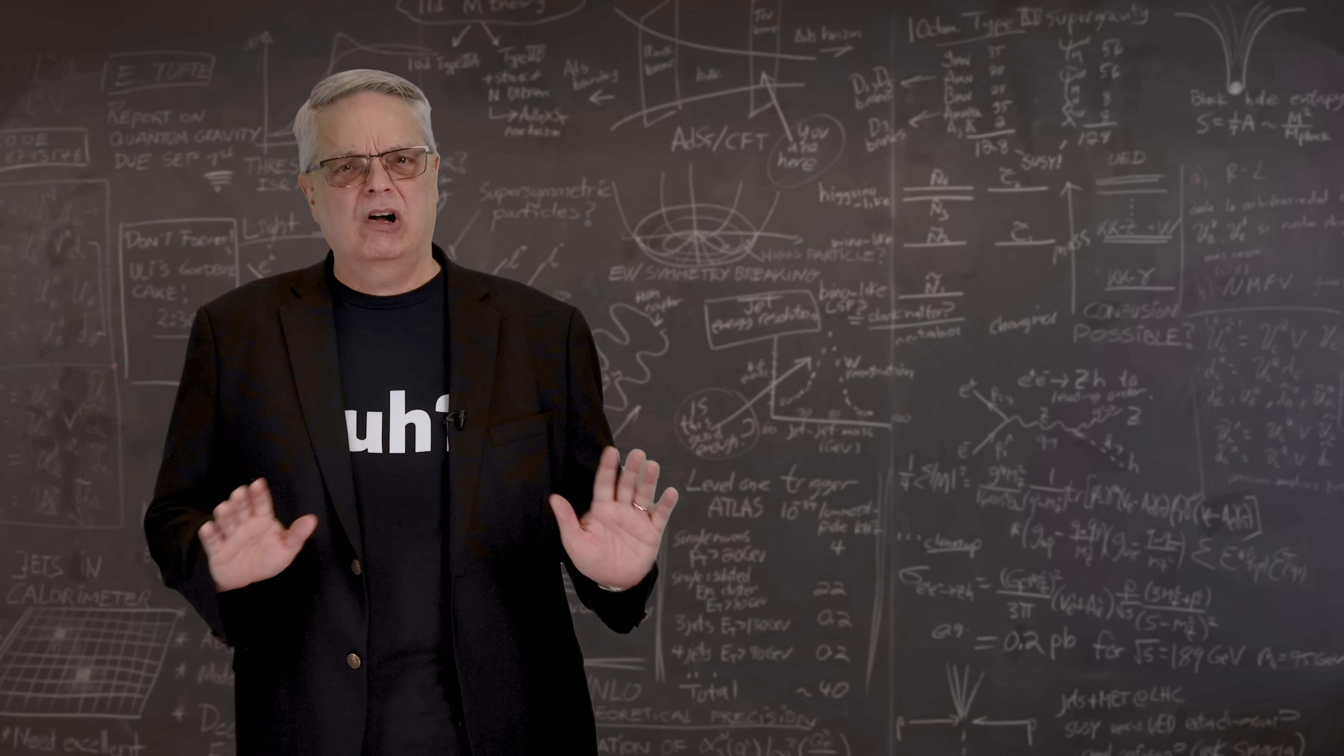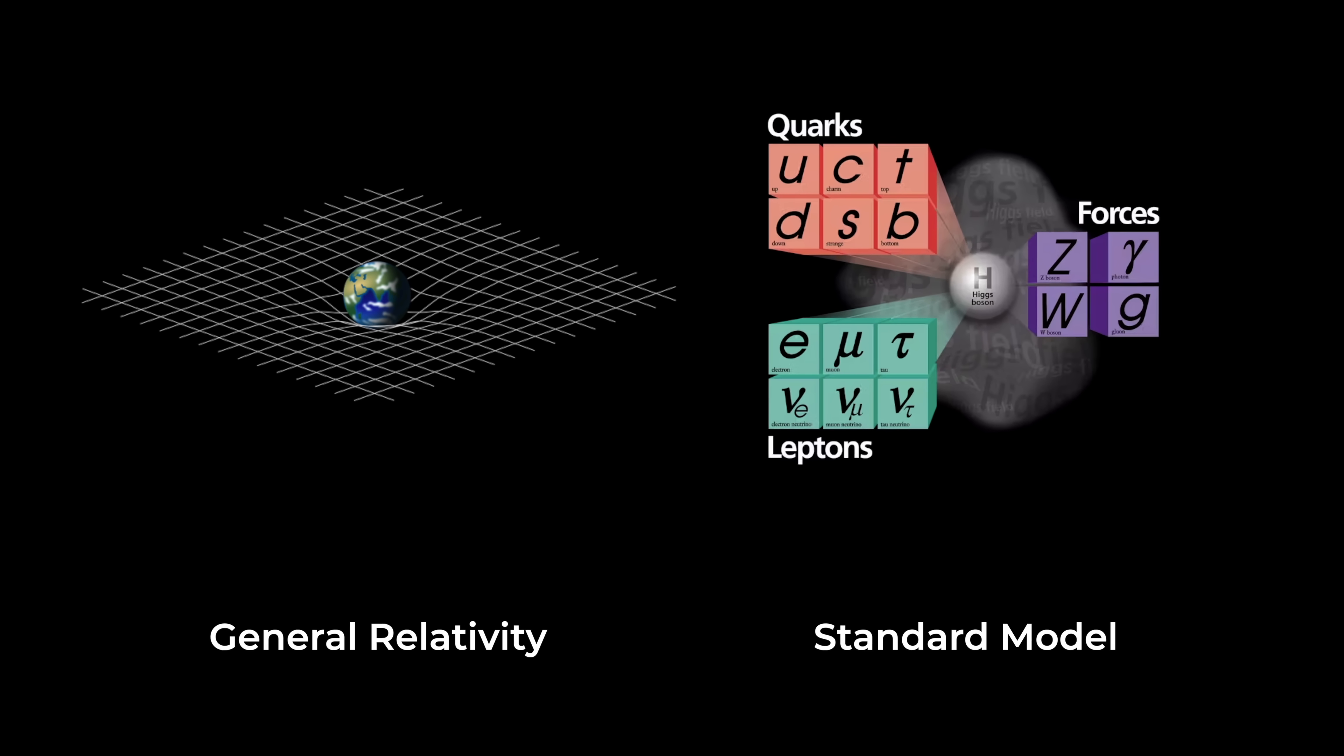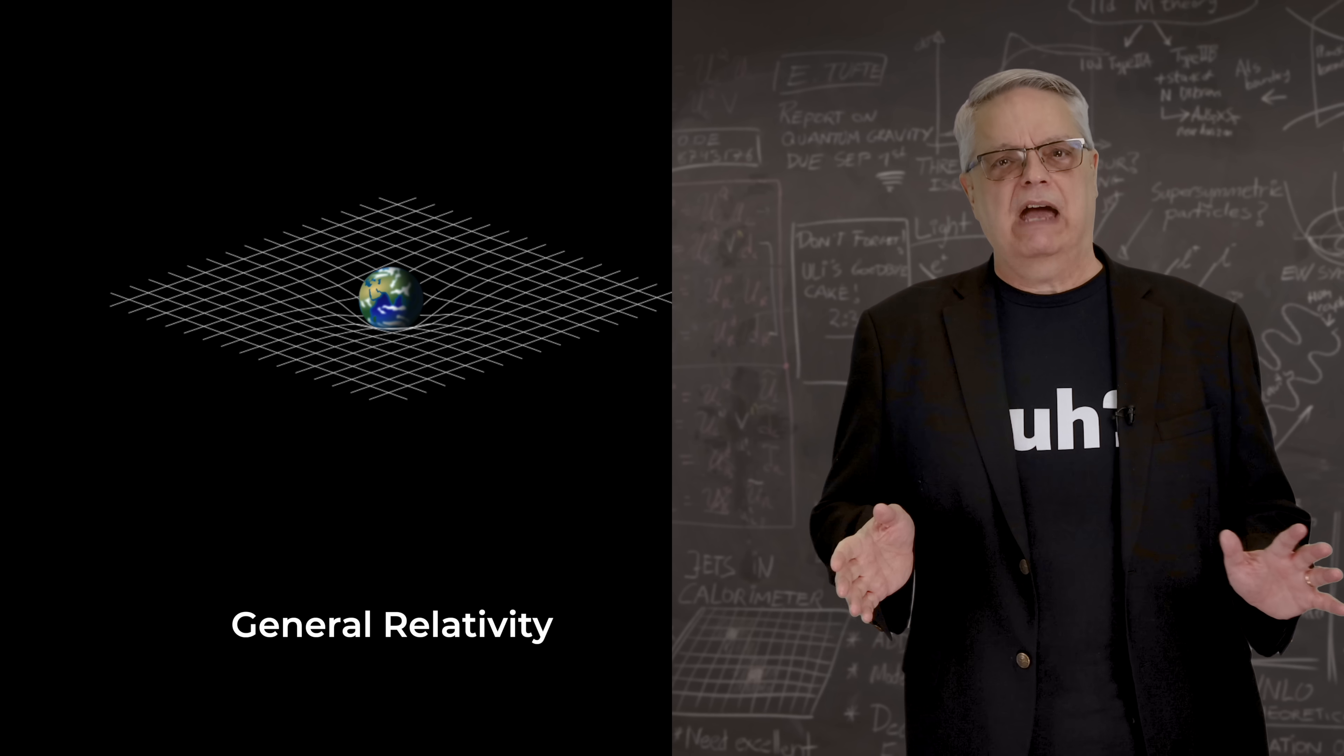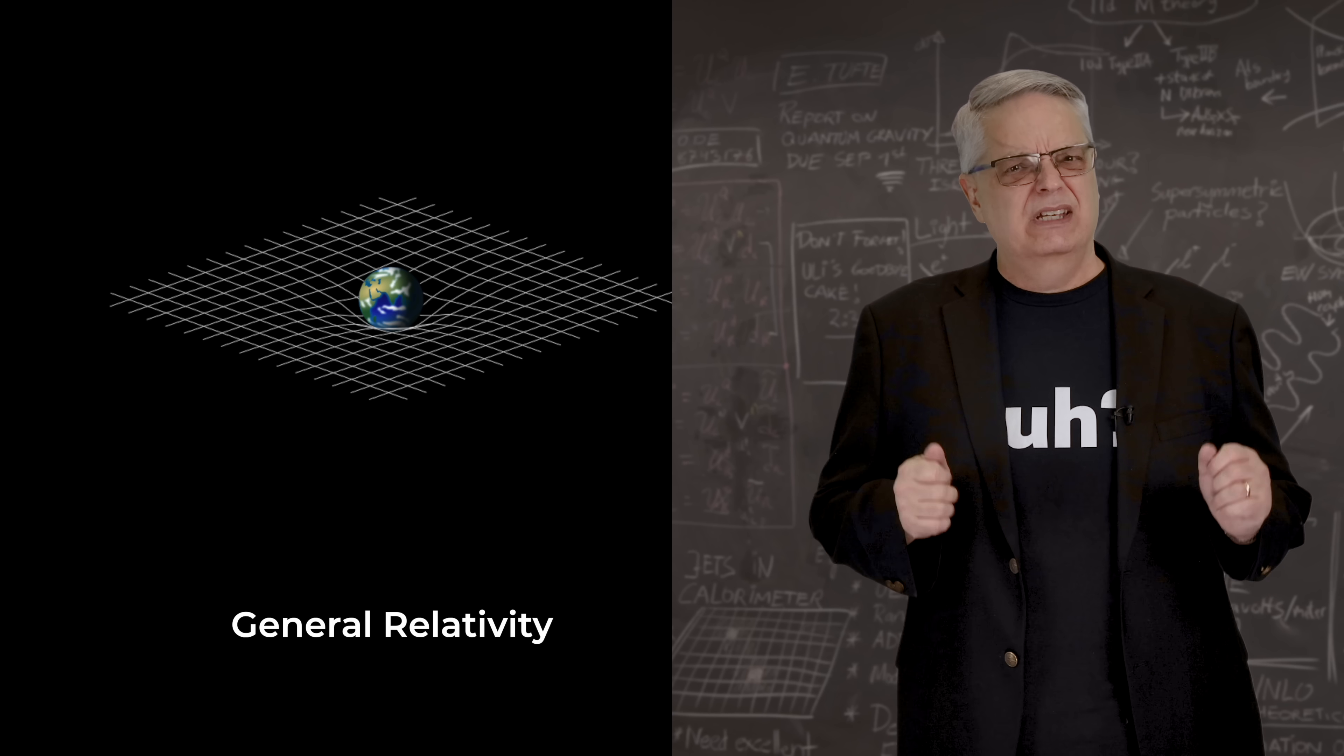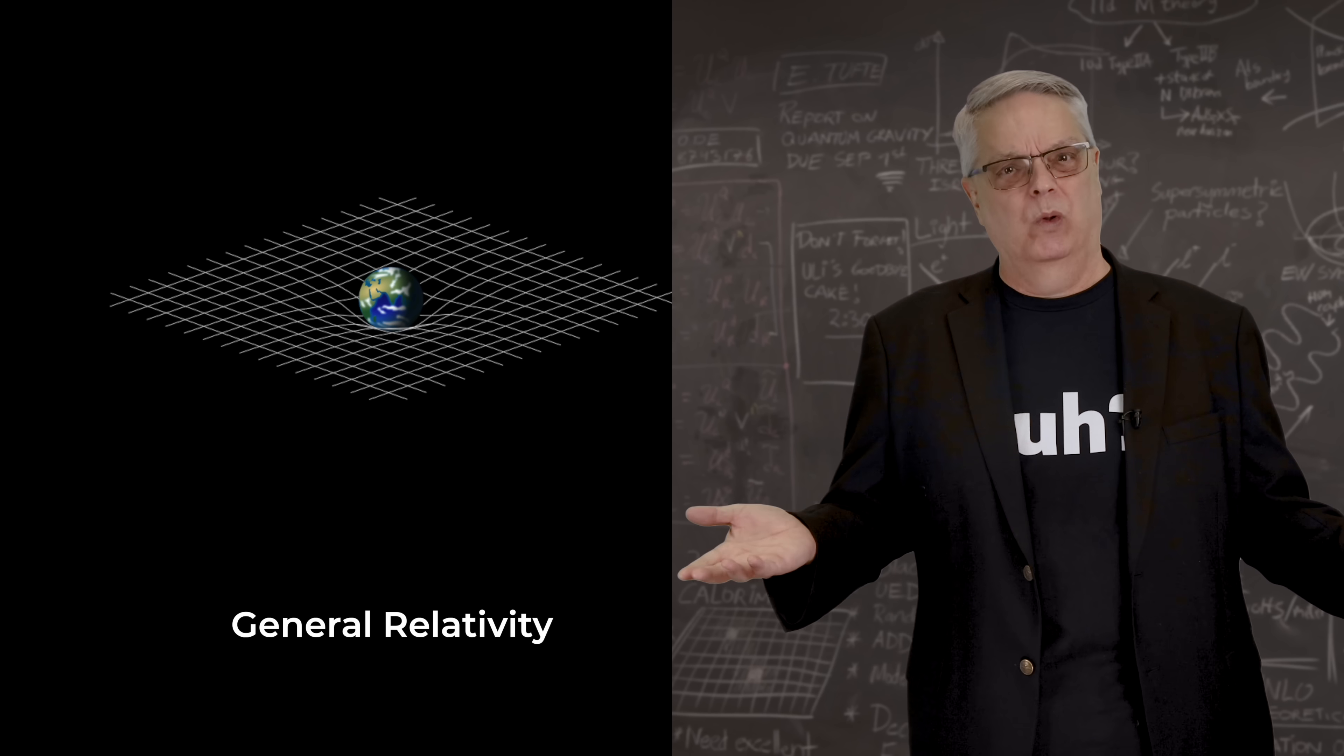The two theories that underpin all of modern physics are Einstein's theory of general relativity and the standard model of particle physics. General relativity explains the behavior of gravity. This explanation also includes the nature of space and time. Relativity is a theory that describes big things, cosmic things, the universe as a whole.